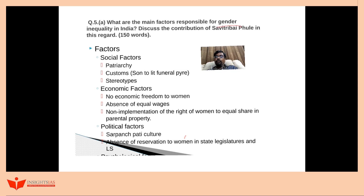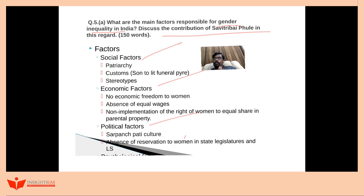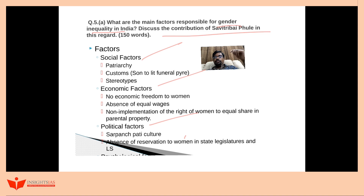The next question asks about main factors responsible for gender inequality in India and the contribution of Savitribai Phule. Again, I have divided factors into social, economic, and political. This is self-explanatory. For Savitribai Phule's contribution: all of us know she was the first to promote female education in India, the first to start a school for girls, and she went house to house motivating parents to send their daughters to school. Even if you haven't read in detail, you can write that she struggled hard for the emancipation of girls, motivated them to attend schools, and personally taught many girls.